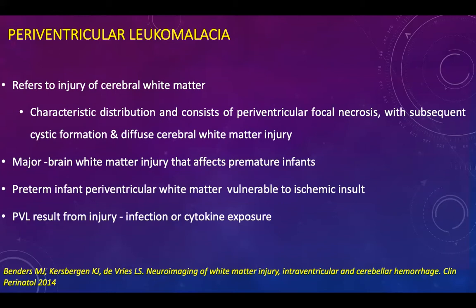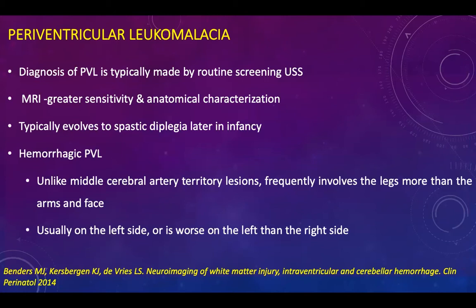Periventricular leukomalacia refers to injury of cerebral white matter, with the correct distribution consisting of periventricular focal necrosis with subsequent cyst formation and diffuse cerebral white matter injury. It is a major brain white matter injury affecting premature infants. Preterm infant periventricular white matter is vulnerable to ischemic insult and can result from infections or cytokine-mediated injury. Diagnosis is typically made by ultrasound scan, which is readily available, but MRI has greater sensitivity and anatomical characterization. Hemiplegic periventricular leukomalacia, unlike middle cerebral artery lesions, involves the legs more than arms and face, usually on the left side.